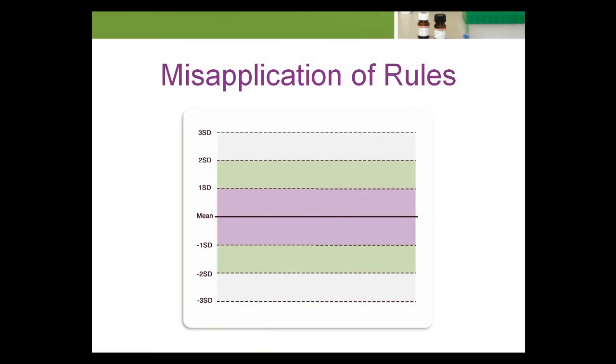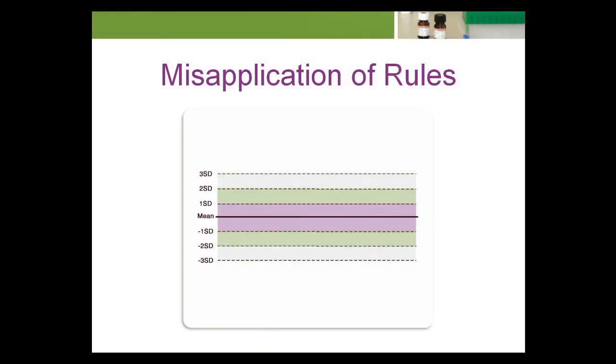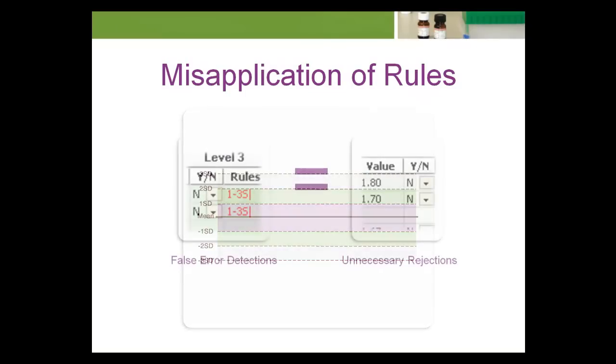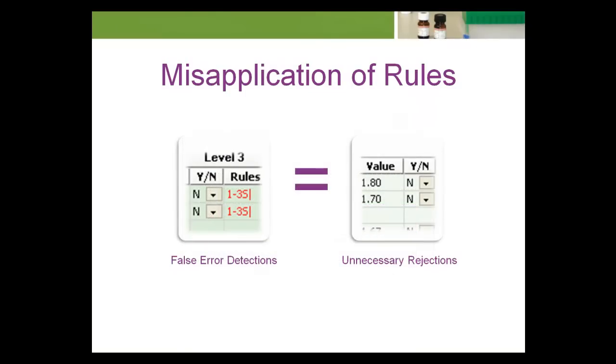Another effect of using the 1-2-S rule indiscriminately is the narrowing of the standard deviation over time, and therefore range on the Levy-Jennings chart. This is because rejected data is not used to calculate the cumulative mean, thereby skewing the mean and standard deviation. The consequence of a narrowing standard deviation over time on the Levy-Jennings chart is the increase in frequency of false error detections and unnecessary rejections.